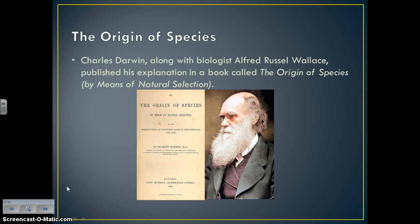Charles Darwin, along with biologist Alfred Russell Wallace, published his explanation in a book called The Origin of Species by Means of Natural Selection. This was the first manuscript to put in print the idea of evolution by means of natural selection, and it's a book still used by scientists today to draw conclusions regarding evolution.